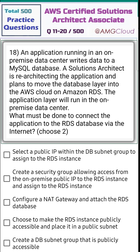Question 18. An application running in an on-premises data center writes data to a MySQL database. A solutions architect is re-architecting the application and plans to move the database layer into the AWS cloud on Amazon RDS. The application layer will run in an on-premises data center. What must be done to connect the application to the RDS database via the internet? You have to choose two options.